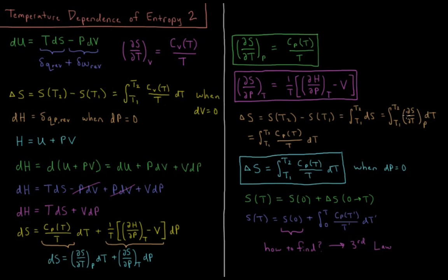We saw that this partial derivative is equal to Cp(T) over T. So the change in entropy during a temperature change at constant pressure is equal to the integral from T1 to T2 of the constant pressure heat capacity divided by the temperature, integrated with respect to temperature.